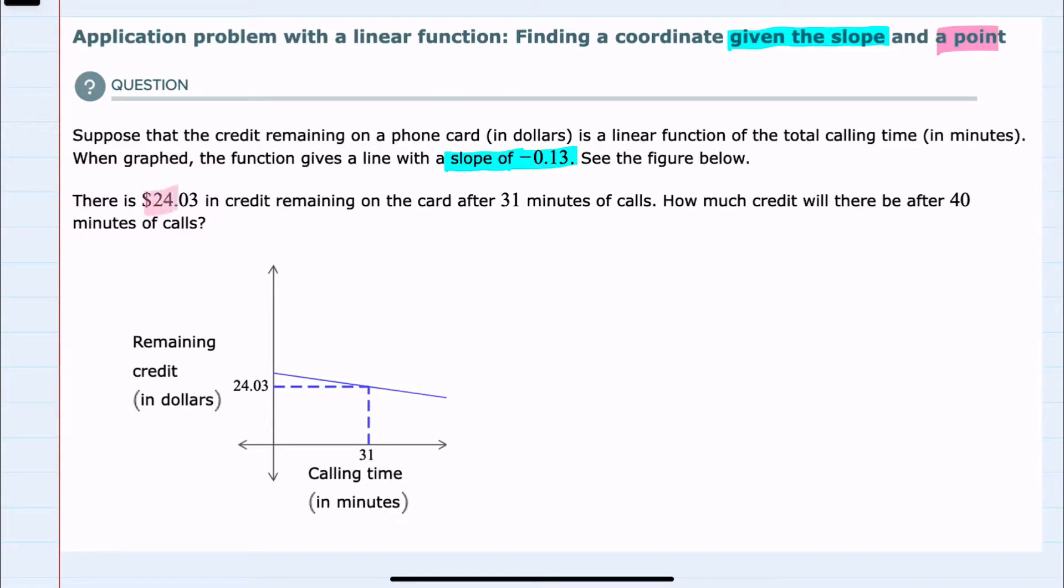That point is that the value is $24.03 when 31 minutes have been used. Since we have a point and a slope, we can use the point-slope formula to find the equation of the line and then answer any question that's being asked about the line.